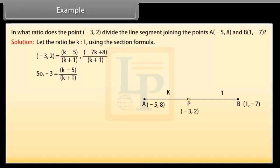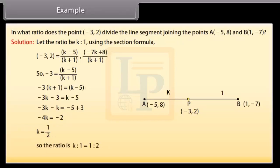So minus 3 is equal to K minus 5 by K plus 1. Minus 3 into K plus 1 equals K minus 5, which is equal to minus 3K minus 3 equals K minus 5, equal to minus 3K minus K equals minus 5 plus 3, is equal to minus 4K equals minus 2, K is 1 by 2. So the ratio is K is to 1 is equal to 1 is to 2.